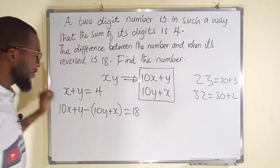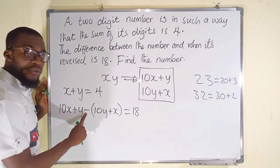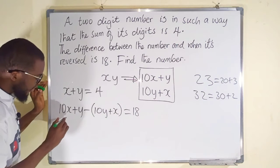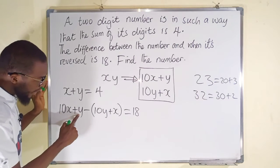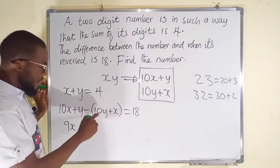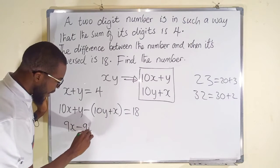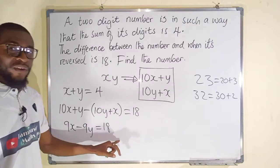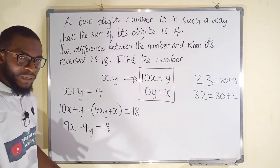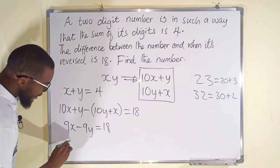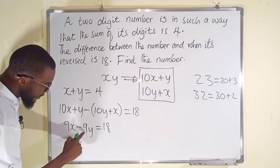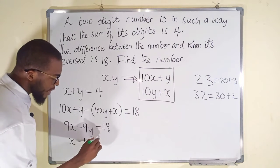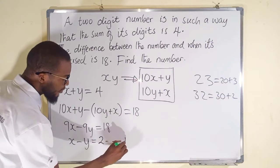This minus is going to affect every term here, so we have 10X minus X is 9X, then Y minus 10Y is negative 9Y, and to the right we have 18. 9 is a common factor, so we can divide every single term by 9. This divided by 9 is X, this divided by 9 is Y, and to the right side, 18 divided by 9 is 2. We have formed another equation, this is our second equation.